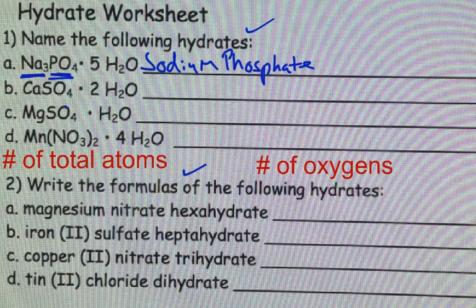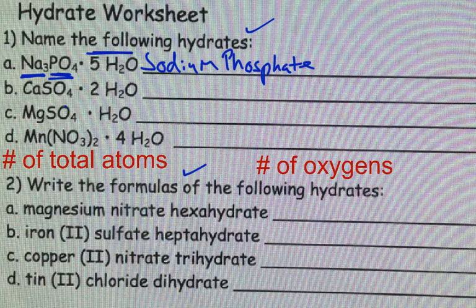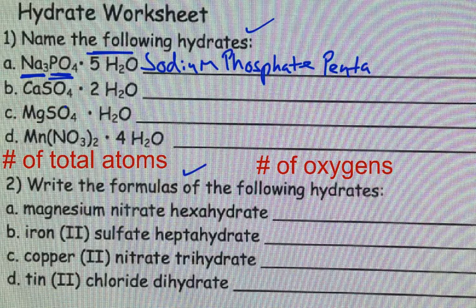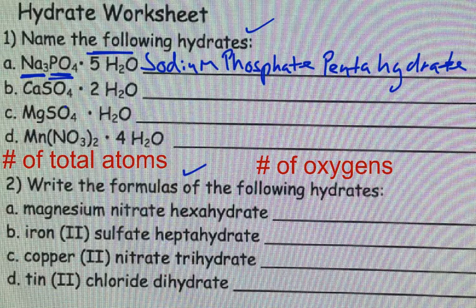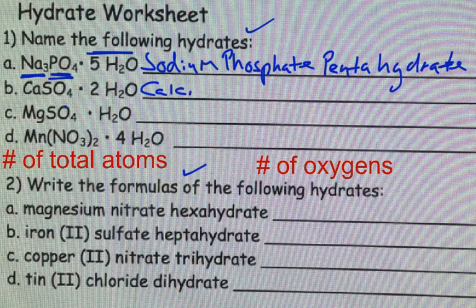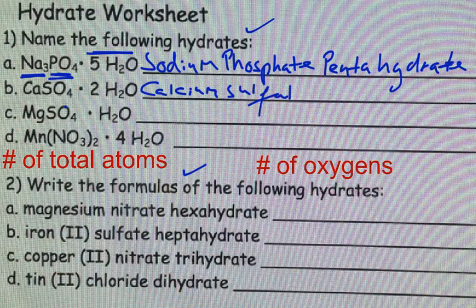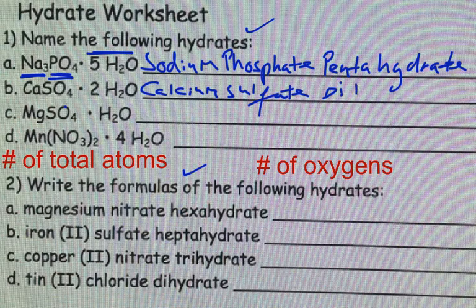Now, in terms of this part right here, you have five H2Os. You simply represent the five with the Greek prefix penta. And H2Os would be represented as hydrate, represented that the compound is a hydrate. And you're done. So sodium phosphate pentahydrate is your answer.